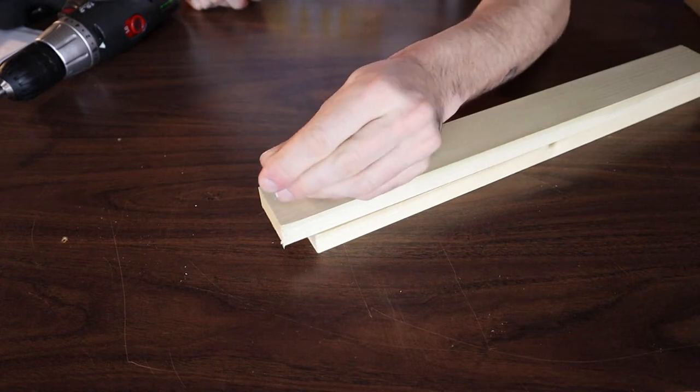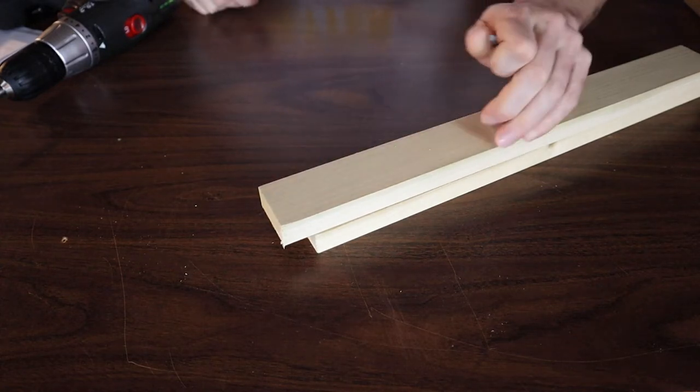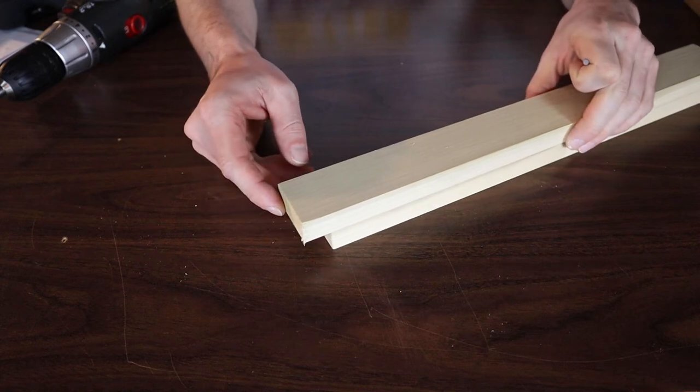You're also going to want to avoid nailing right near the end of a piece of wood, especially if it's hardwood like this. This is poplar and it splits very easily.